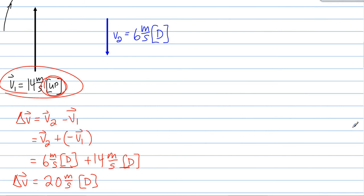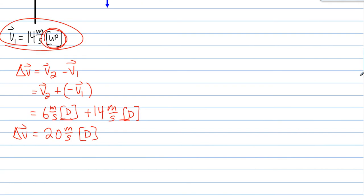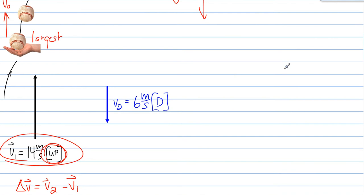What this means, the significance of this, is that over a given period of time, we haven't defined it, but we will, over a given period of time, the object's velocity is changed by 20 meters per second in the downward direction. So ultimately, the change in velocity vector must point down.